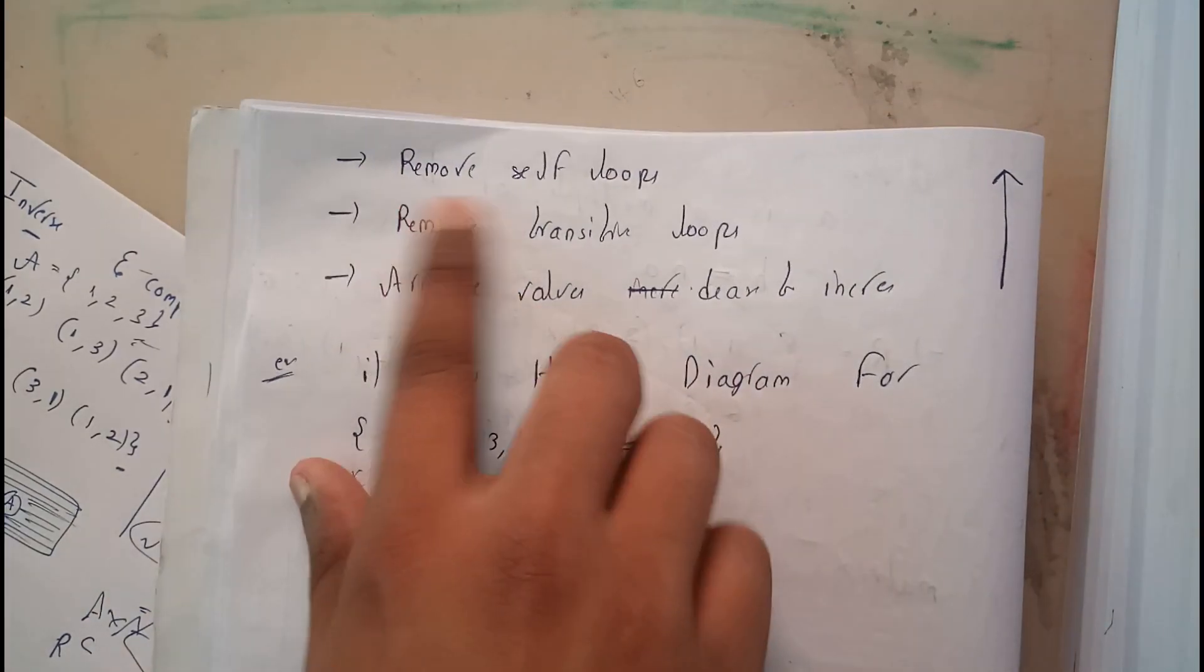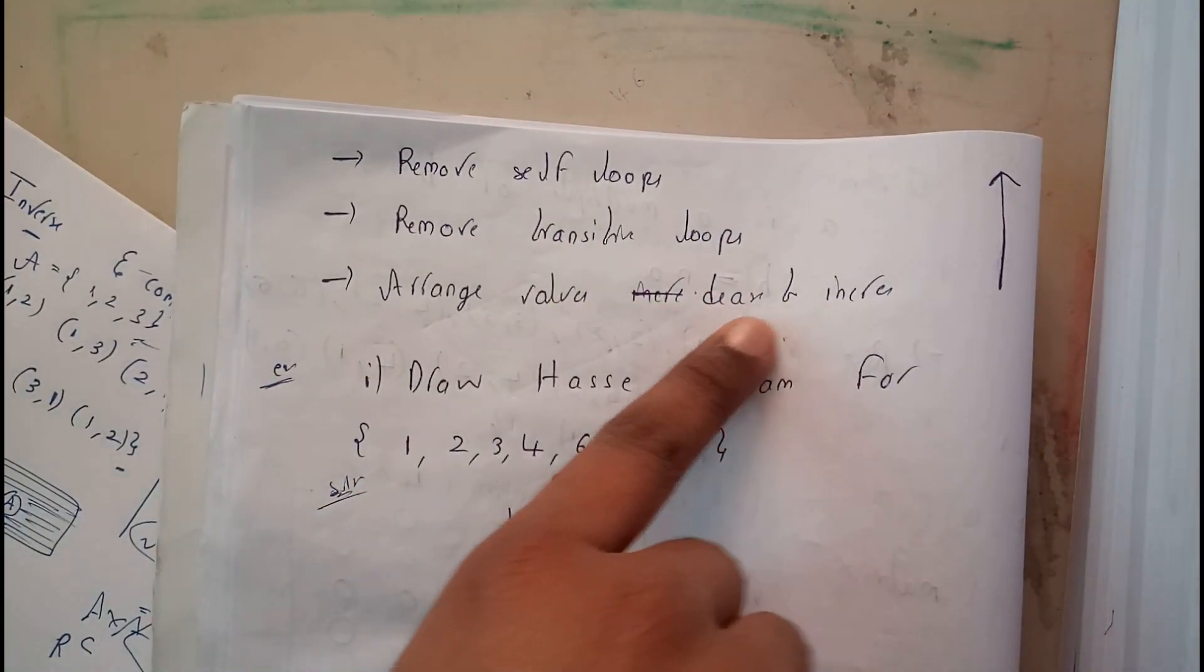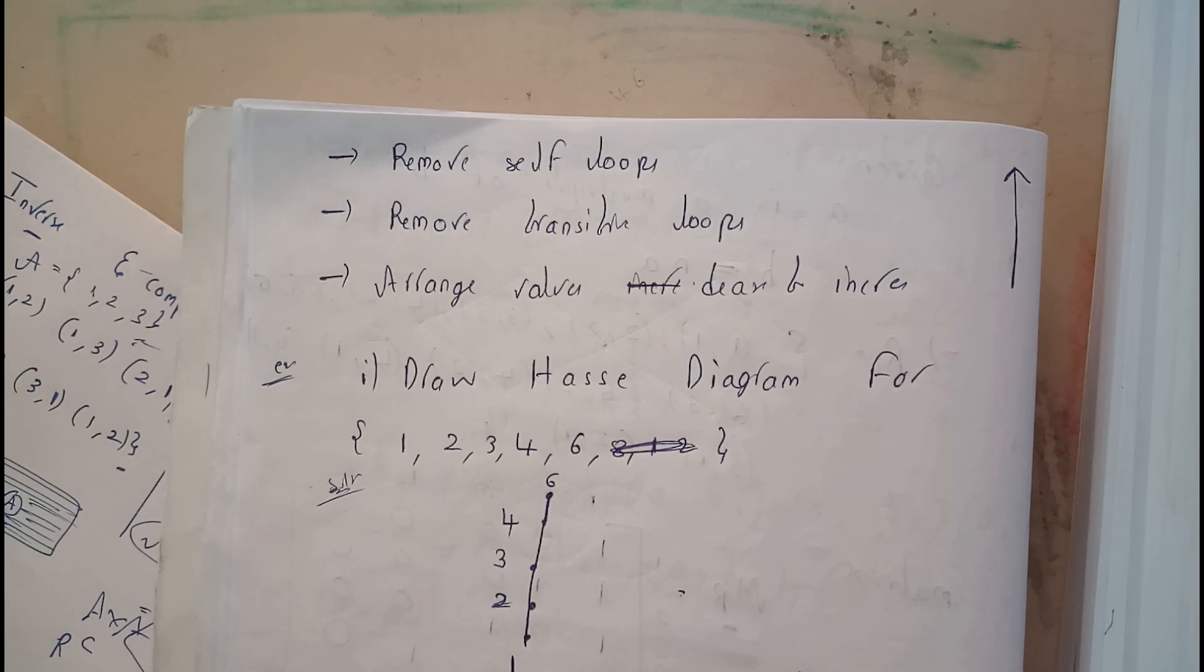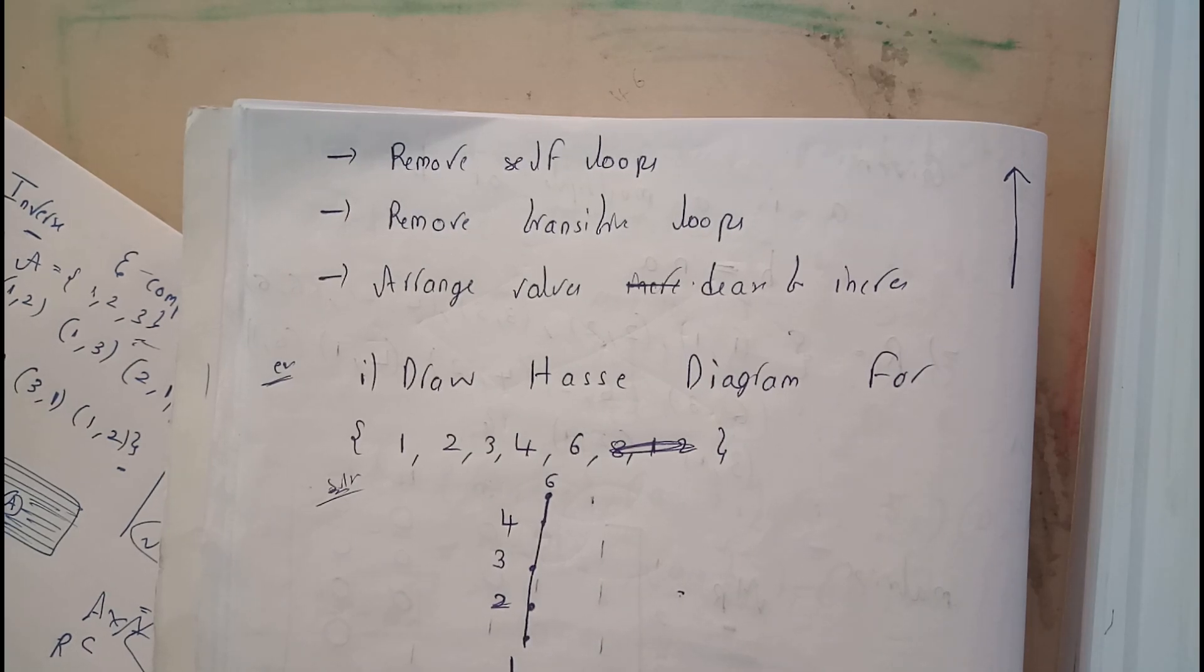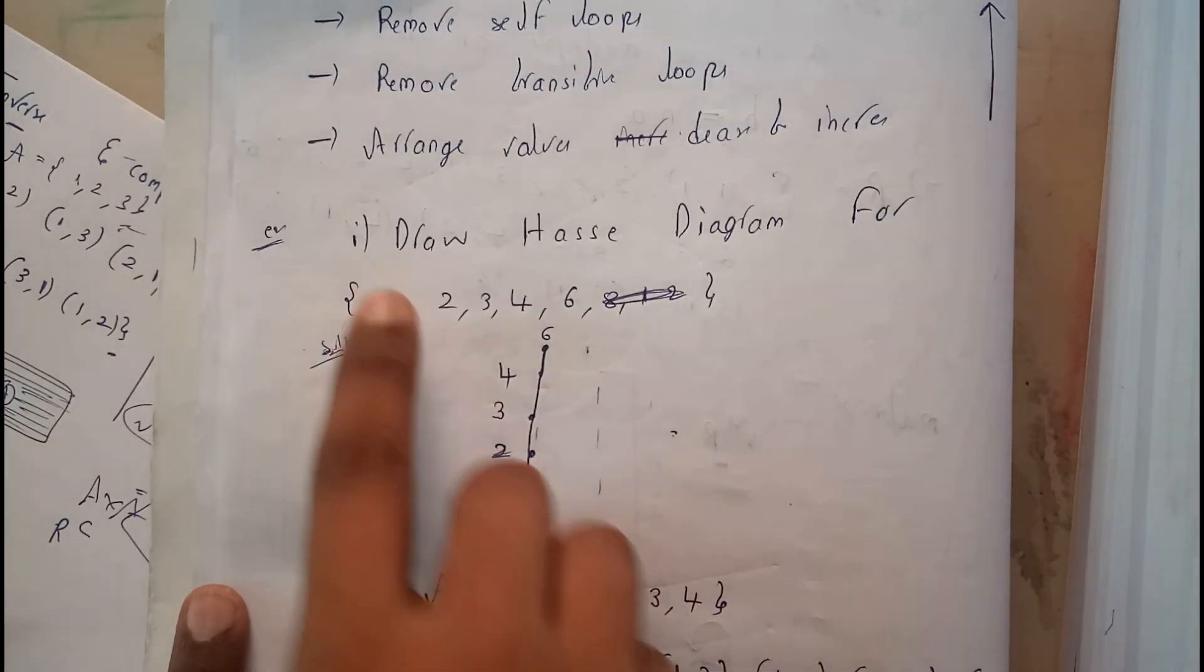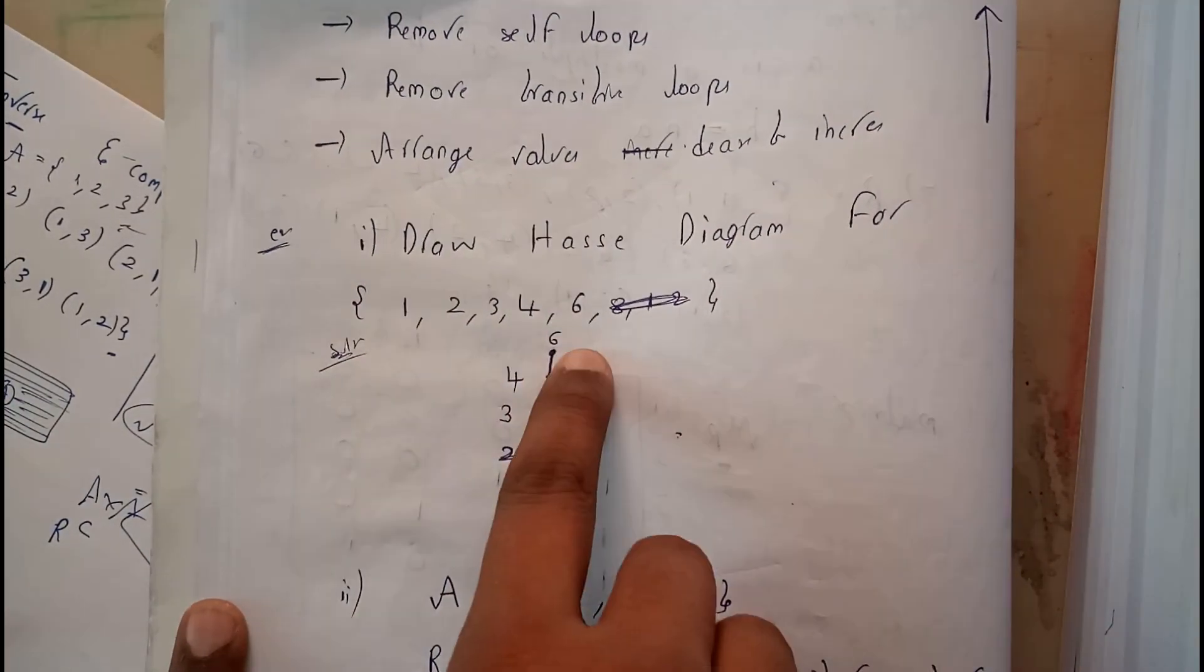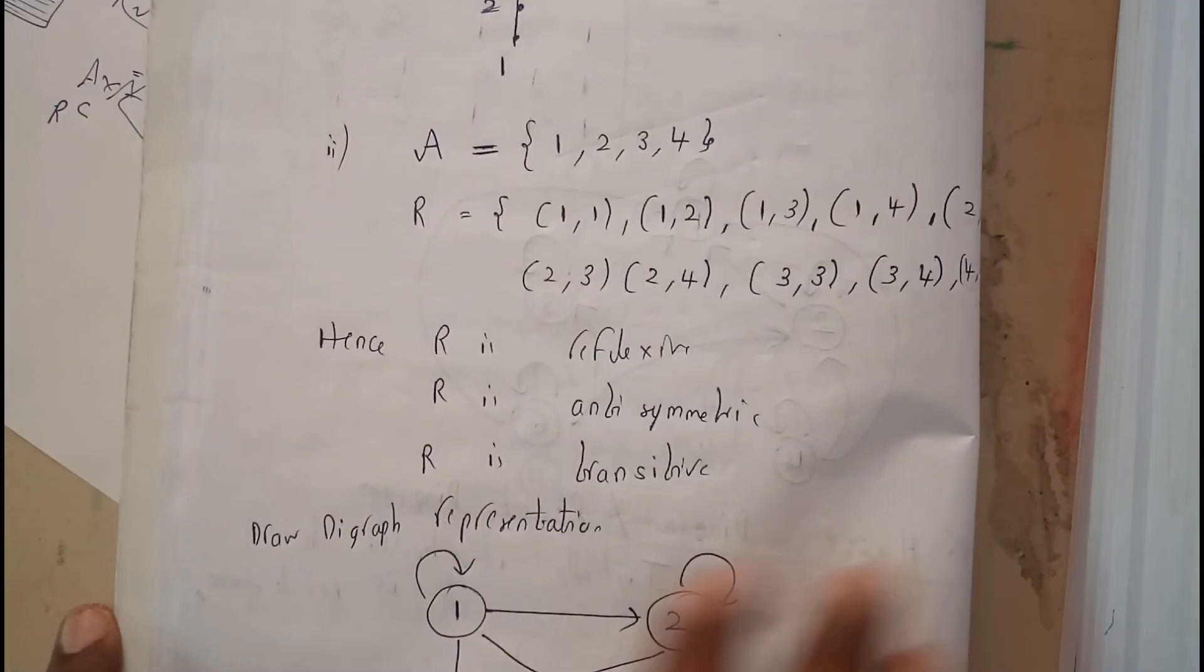Initially, what are the steps that we follow? Removing the self-loops and removing the transitive edges and arranging the values where the greater value will be at the top and the lowest value will be at the bottom. If there was a diagram for 1, 2, 3, 4, 6 like this. Let us take an example.